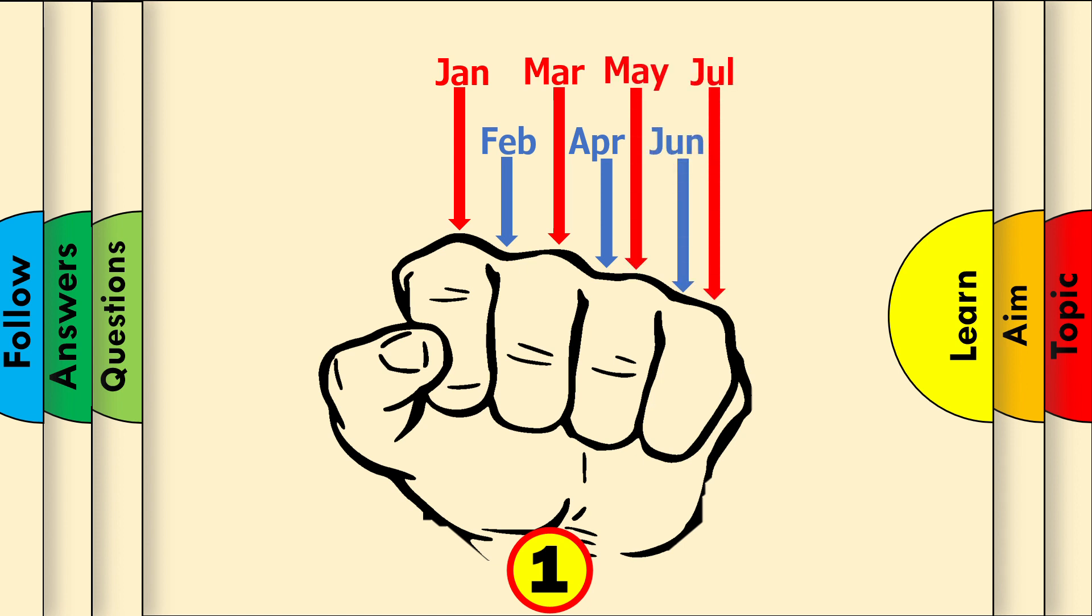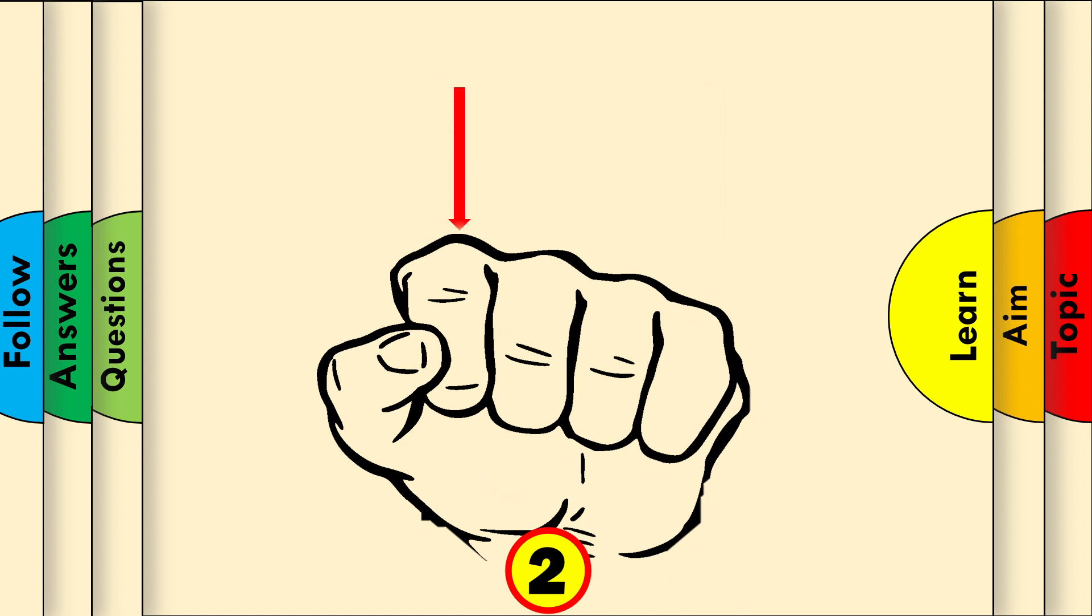Once you've reached July, start counting the months again from the knuckle nearest to your thumb. August, then September, October, November, and December.